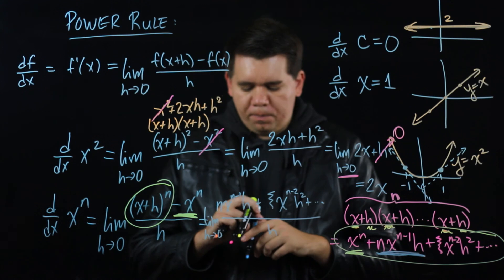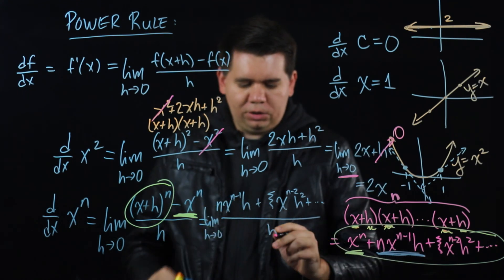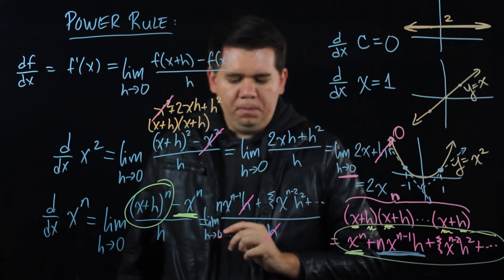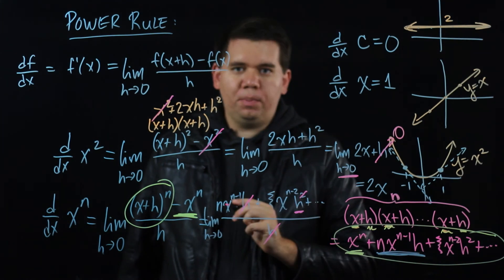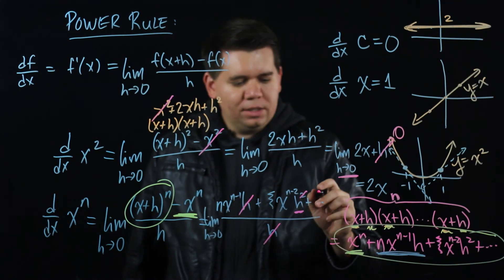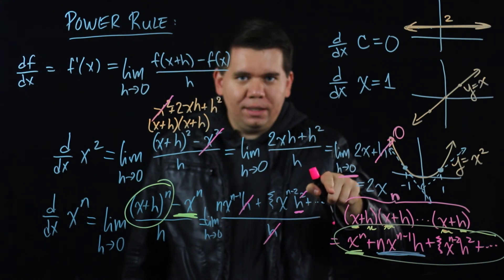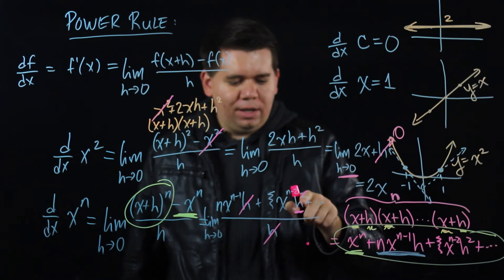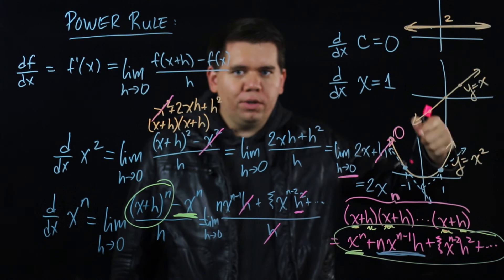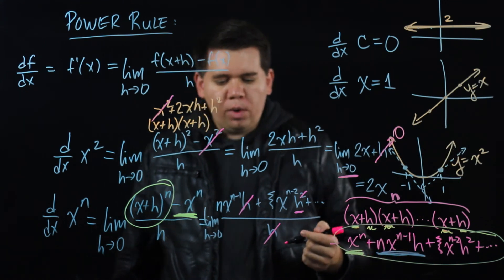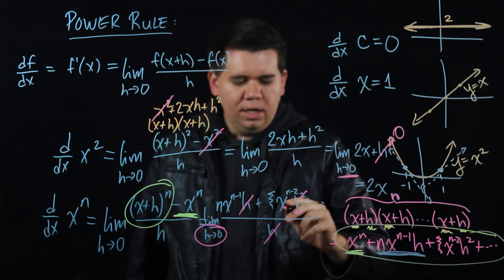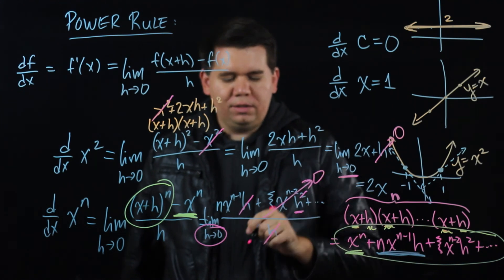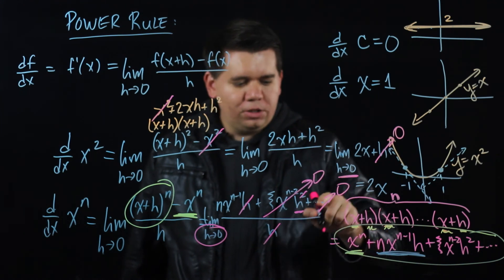But notice what happens now. When I divide by h, that h will be gone. That h, one of them will be gone, but I still have an h piece. And likewise, the next term would have an h³ in it, so when I cancel one of the h's, it still has an h² and so forth and so on. And so what do I end up with? Well, now taking the limit as h goes to 0, this whole thing will go to 0 because it still has an h. And all the other terms still have h's also.